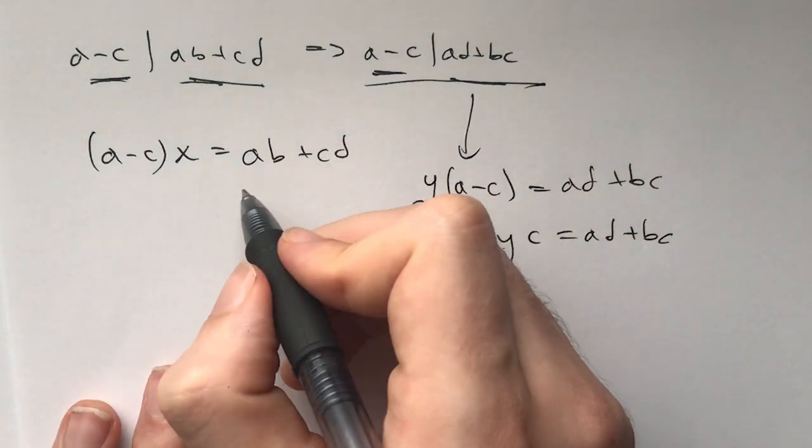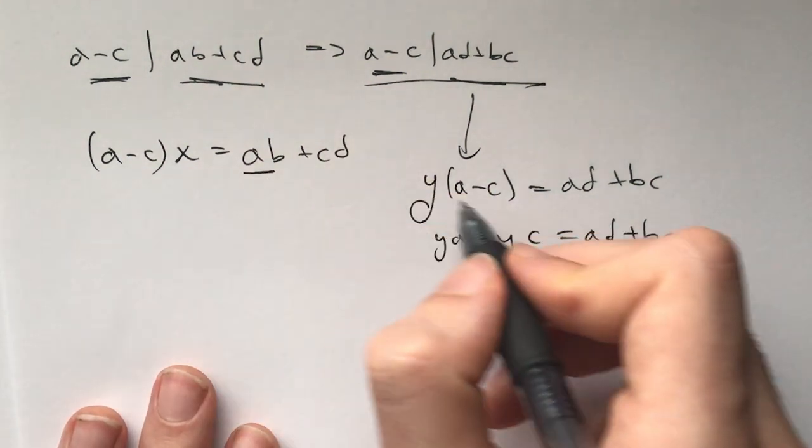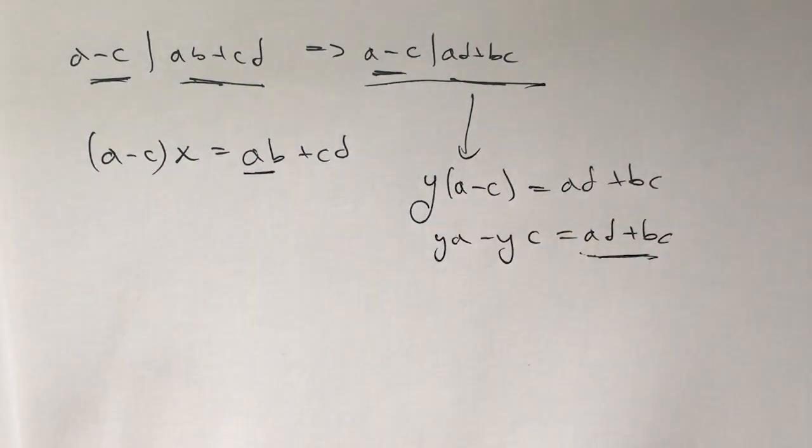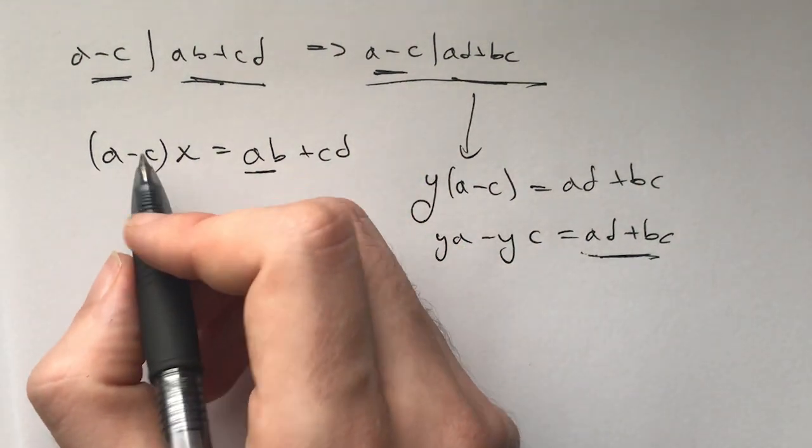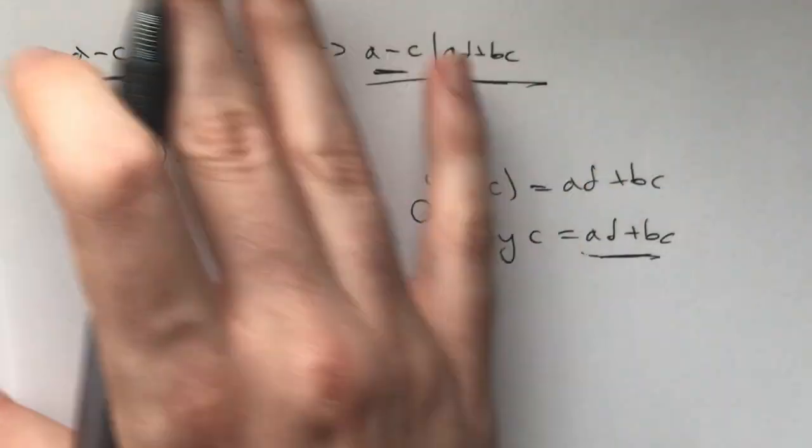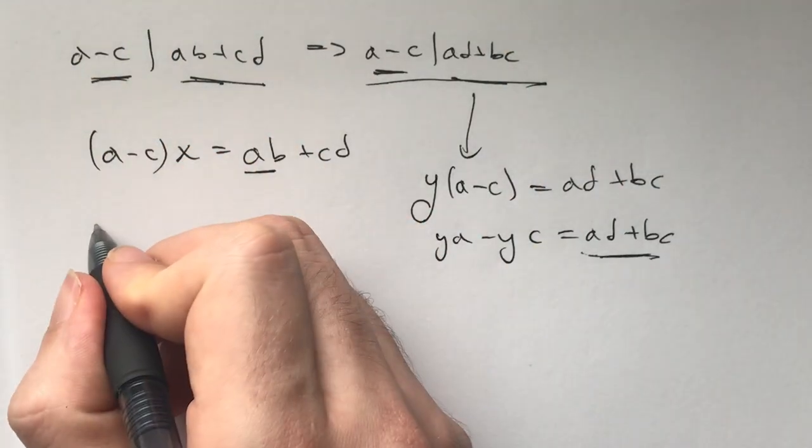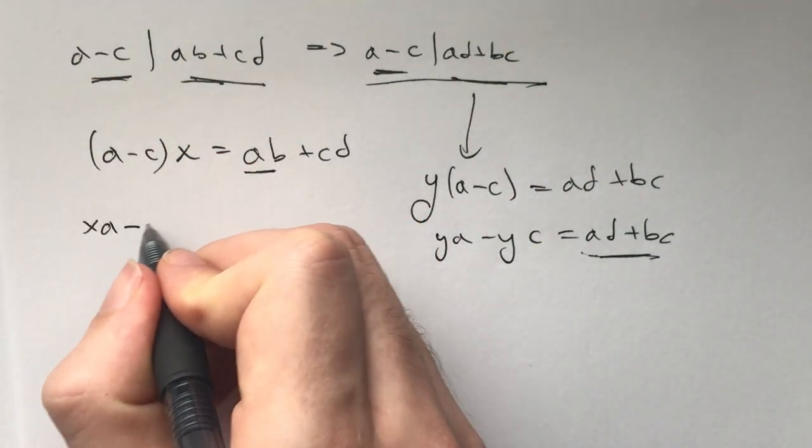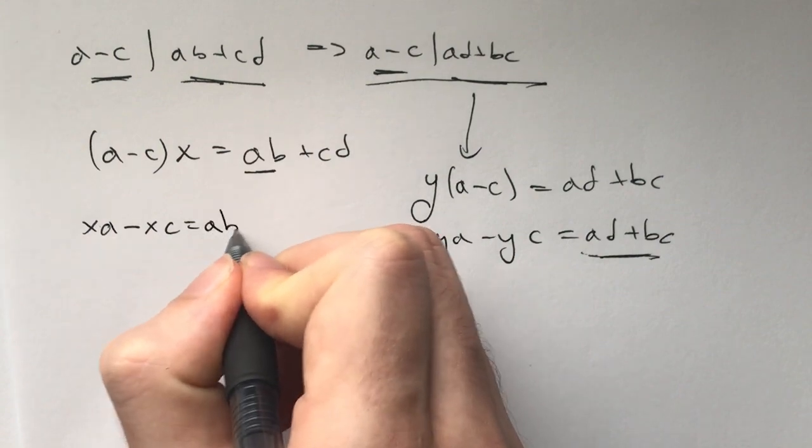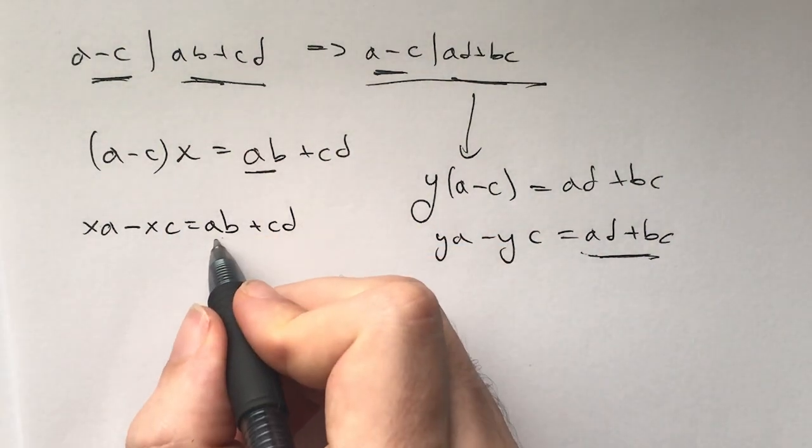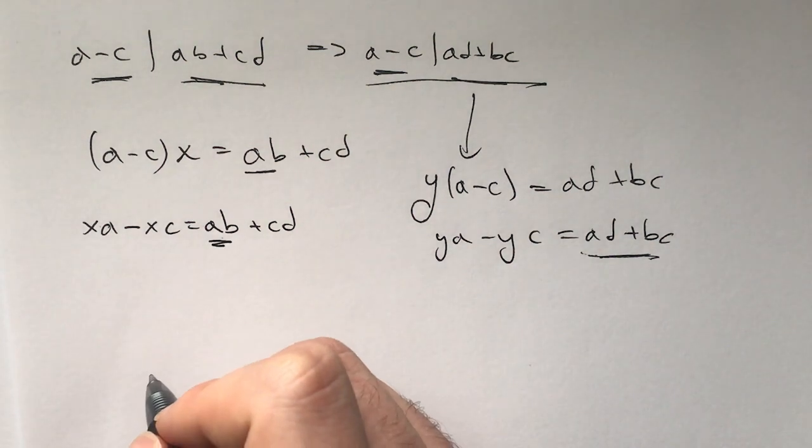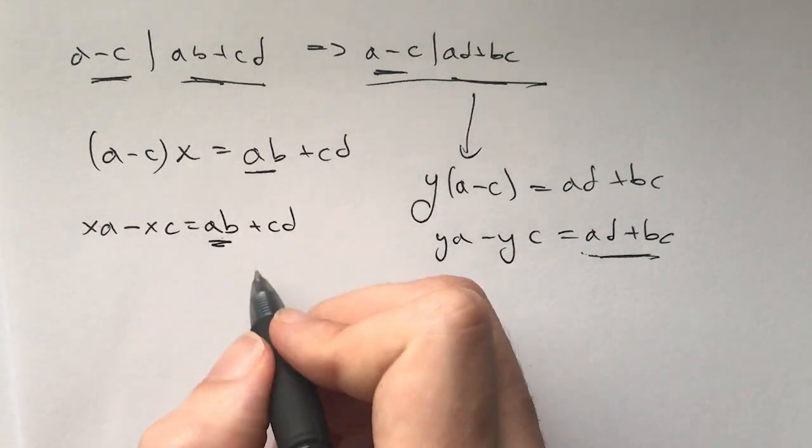Now how can we transform these things here into these things here? That is basically what our question is. What can we do? This is one way of thinking about this. This is xa minus xc equals ab plus cd. Can we get rid of ab somehow? What if we add or subtract something?